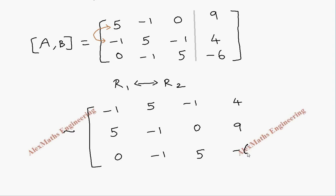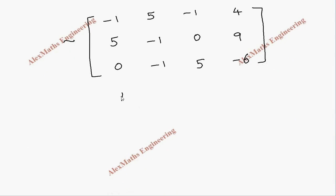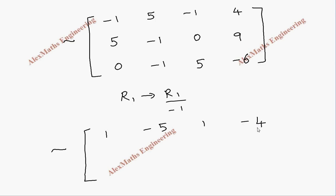Now we divide the entire row 1 by -1 so that we get a 1 in the first position. Row 1 becomes [1, -5, 1 | -4] — all elements change sign. Row 2 and row 3 are written as they are.